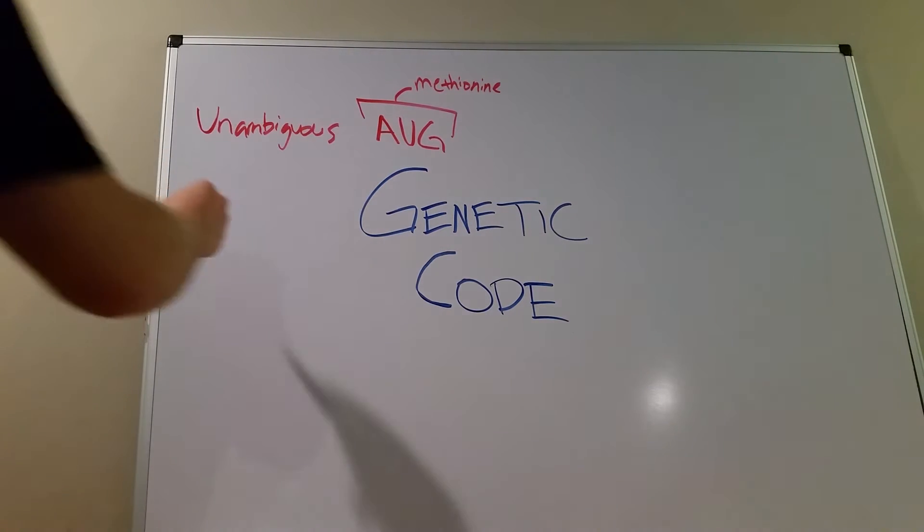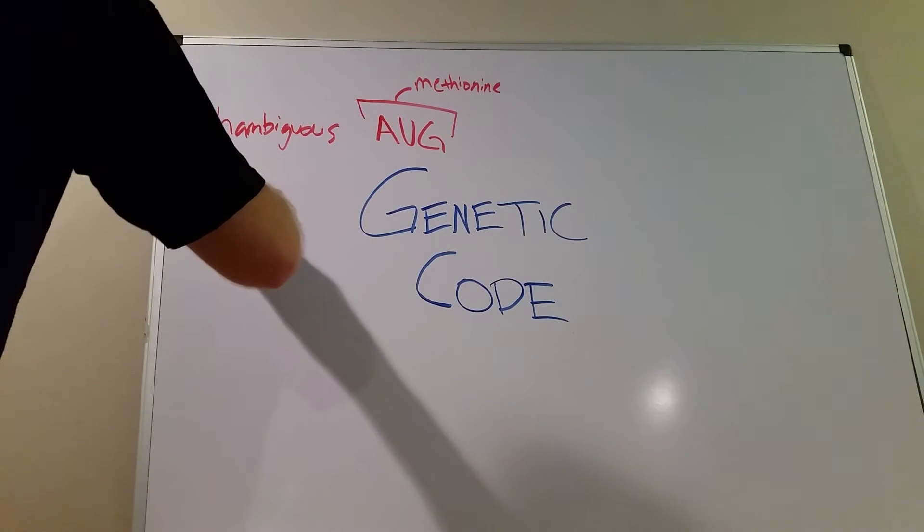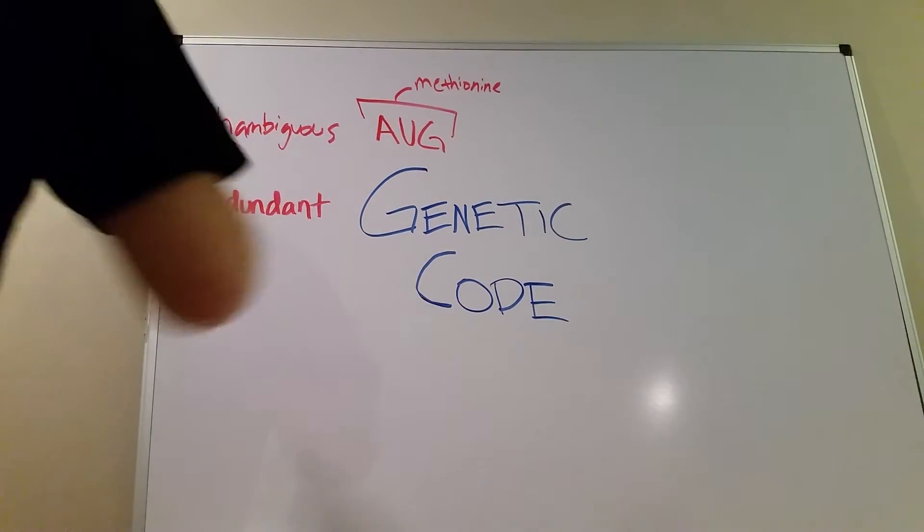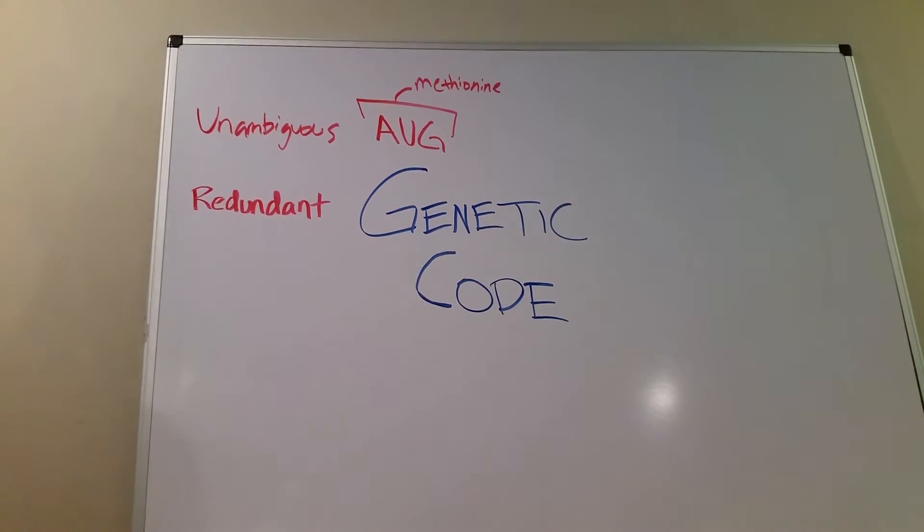The second thing is that it is redundant. Now some people use the word degenerate, but Med School Made Easy is the optimist and we're going to use the word redundant. Redundant or degenerate. Now what does redundant mean? It means that most amino acids are coded by multiple codons. Now there are some exceptions to this.